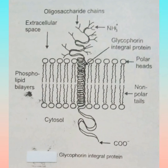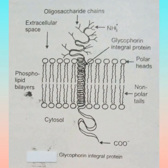Here you can see in the figure the structure components of glycophorin. Glycophorin has two basic components: extracellular space and cytosol. The extracellular space contains glycophorin integral proteins, and the phospholipid bilayer consists of two components: polar heads and non-polar tails. The cytosol contains the COO terminus.